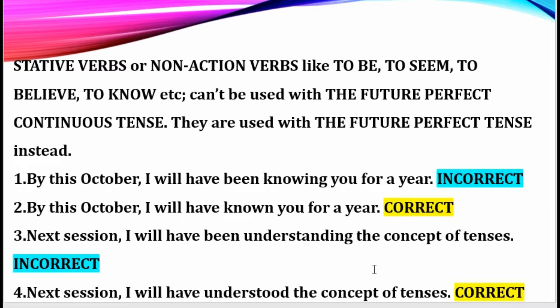Verbs of perception — non-action verbs — don't carry -ing. So don't use the future perfect continuous tense with them; opt for the future perfect tense. I have heard so many people use 'understanding' like an action verb — for example, 'Are you understanding?' This is really wrong. We can't make stative verbs into action verbs. It should be 'Are you able to understand?', 'Do you understand?', 'Have you understood?', or 'Did you understand?' Please don't ever make that mistake.